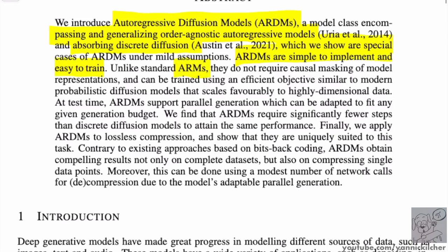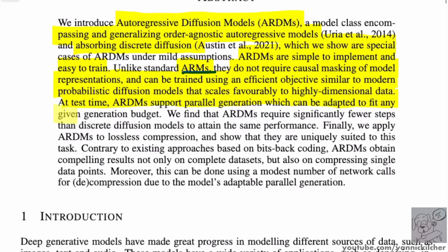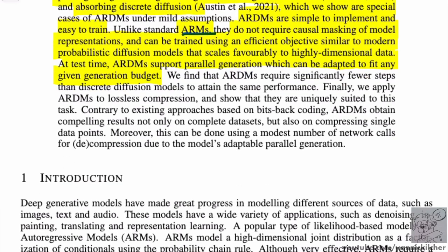Unlike standard autoregressive models — LSTMs or GPT-type transformers — these do not require causal masking of model representations, and can be trained using an effective objective similar to modern probabilistic diffusion models that scales favorably to high-dimensional data. At test time, ARDMs support parallel generation which can be adapted to fit any given generation budget, so you can trade off sample quality for speed. They also require significantly fewer steps than discrete diffusion models to attain the same performance.